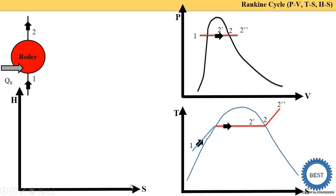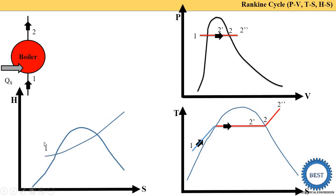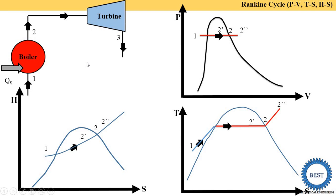Now we draw the third diagram: the HS diagram, where enthalpy (H) is on the y-axis and entropy is on the x-axis. In the HS diagram, there is a saturation curve and constant pressure lines shown as curve lines. Point one is in the liquid region. The process moves through the liquid-plus-steam mixture region, and point two-dash (dry and saturated) is on the saturation curve, while two-double-dash is in the superheated region.